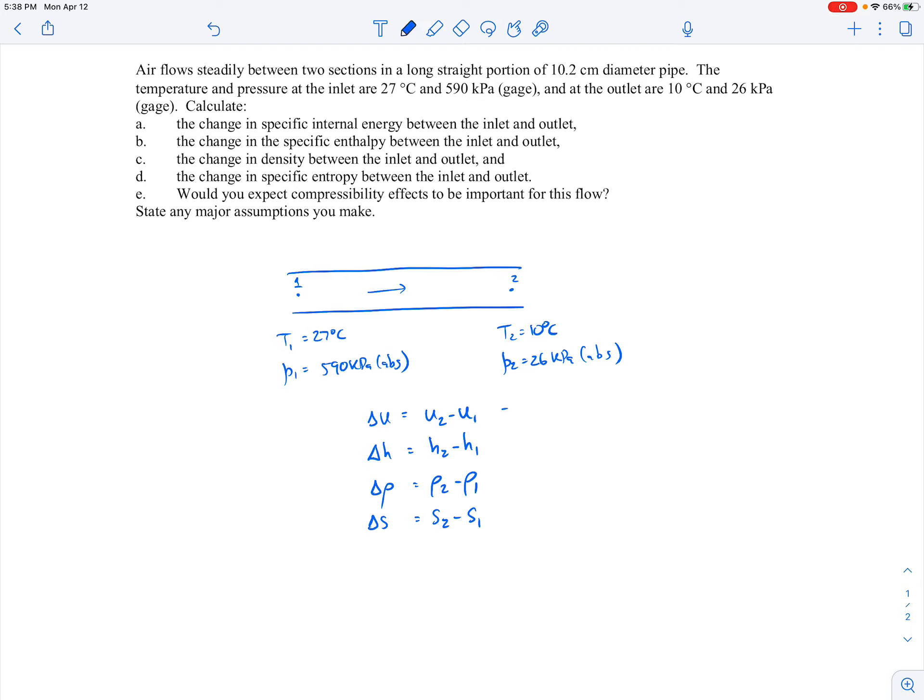The delta U, for example, we could calculate as C sub V times T2 minus T1. In general, the Cv would be a function of temperature for an ideal gas, but over a small range in temperatures, it's totally fine to assume that Cv is a constant. So if we look up the specific heat at constant volume in this temperature range from a thermodynamics table, you'll find that it comes out to be 717 joules per kilogram Kelvin for the Cv.